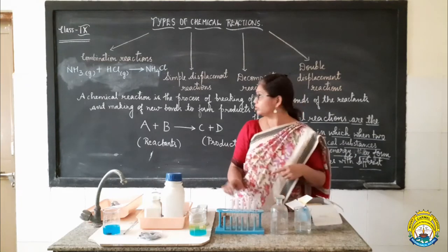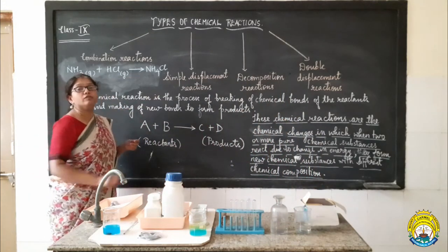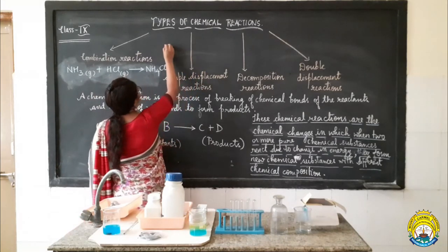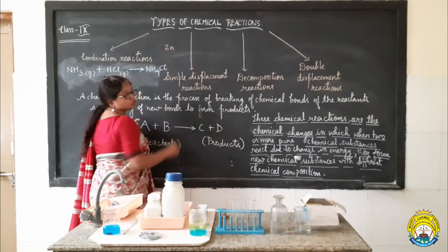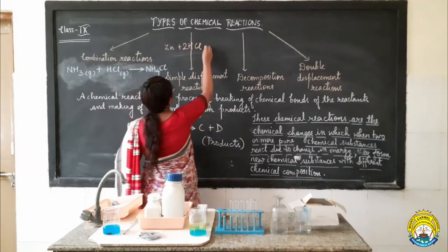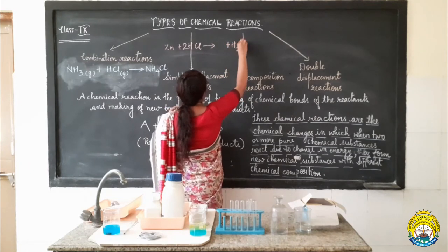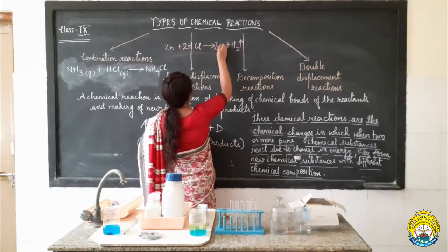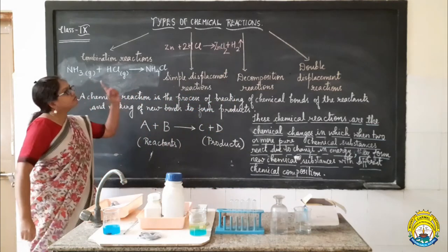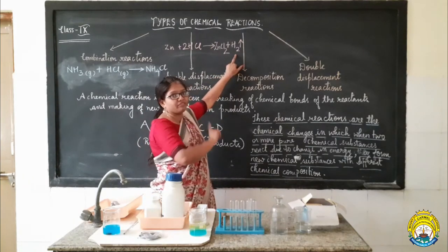Let me write the reaction for you. The activity which we have seen can be shown like this: zinc metal strip is getting reacted with hydrochloric acid to form hydrogen gas and also to form the soluble salt zinc chloride. The main feature of this reaction is the evolution of hydrogen gas, which you have observed when brisk effervescence was evolved.